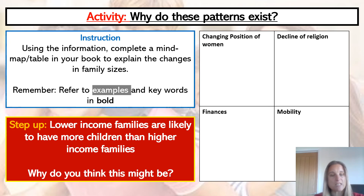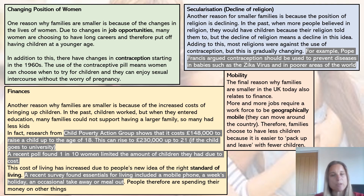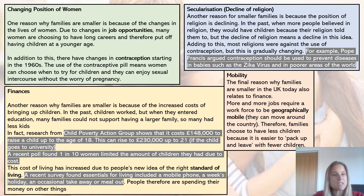I won't read all of this out, but you can see this corresponds to the sections on your grid. I'll go through the first one so you get an idea of what to jot down. Changing position of women: one reason why families are smaller is because of changes in the lives of women. Due to changes in job opportunities, many women are choosing long careers and therefore putting off having children at a younger age. Also, changes in contraception starting in the 1960s — the contraceptive pill — mean women can choose when to try for children. And of course, if women are having children later in life, they have fewer years in which to actually have children.